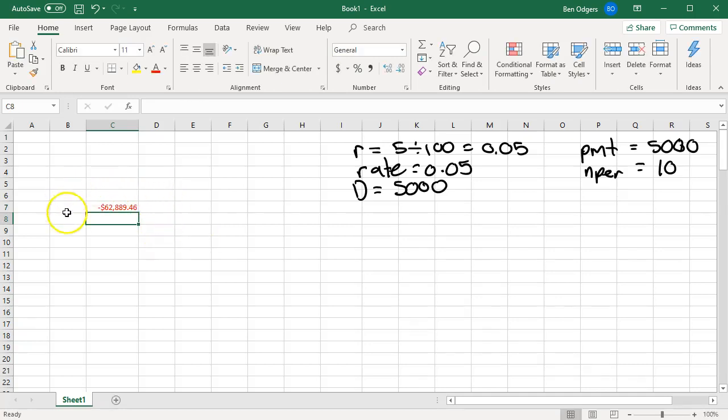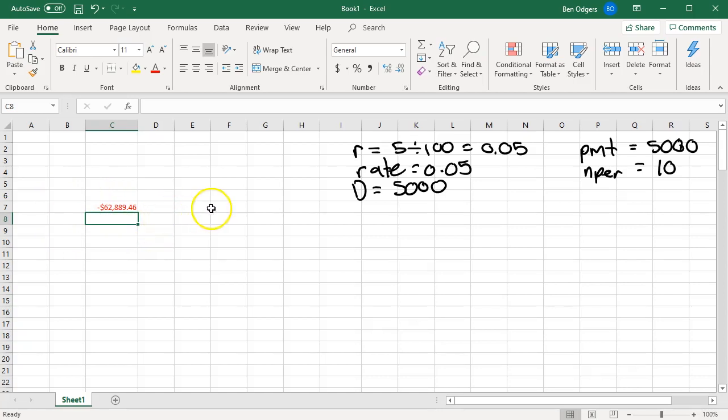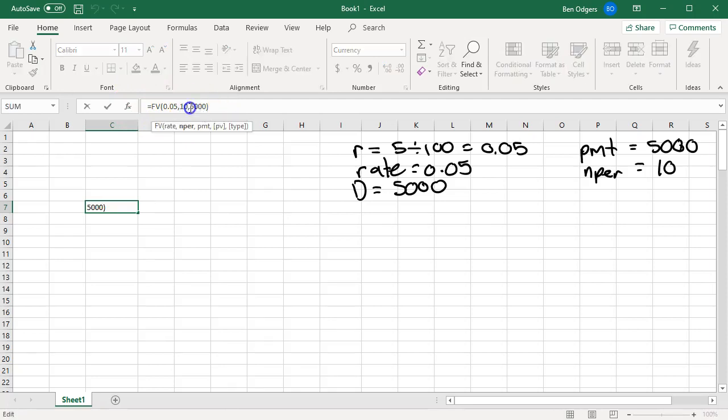Now the first thing you might notice is that we got a negative solution. This doesn't make a lot of sense. This is an investment. We want it to be positive. I'll show you how to fix this. First we click on the cell up here at the top. This is where you edit your formula. Now my repayment of $5,000 I'm going to make that negative. And then I'm going to press enter. And you'll see that it's changed into a positive amount which is what we wanted.